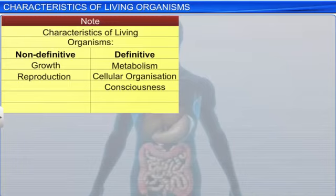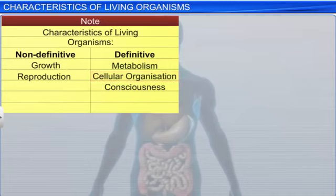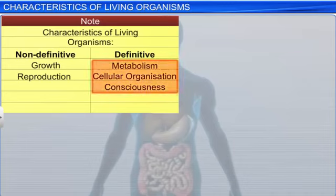Thus, we can say that metabolism, cellular organization, and consciousness are the three definitive characteristics of living organisms.